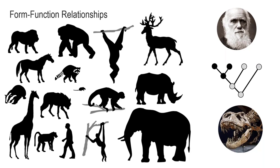For vertebrates it's really hard to overestimate the importance of locomotion and dietary adaptations in their evolutionary success. Musculoskeletal modeling can certainly be applied to dietary systems and the masticatory apparatus, but my goal here is to talk about locomotion. Locomotion is important because it provides animals access to food, water, safety, and potential mates — which means there should be a lot of effect on an animal's fitness and its potential for evolutionary success.